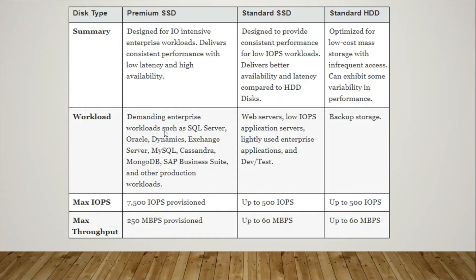There are three types of disks available: Standard HDD, Standard SSD, and Premium SSD. You have to choose your disk based on your project requirement. If you go for Premium SSD, you will get high bandwidth and high throughput. When choosing Standard HDD or Standard SSD, you will get lower IOPS and lower throughput.